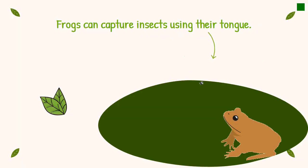Frogs have long and sticky tongues that they use to capture insects. They eat insects such as flies and dragonflies. Larger frogs can even eat grasshoppers, birds, small snakes, baby turtles, and even other smaller frogs.